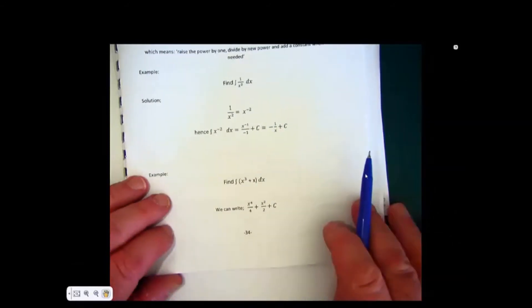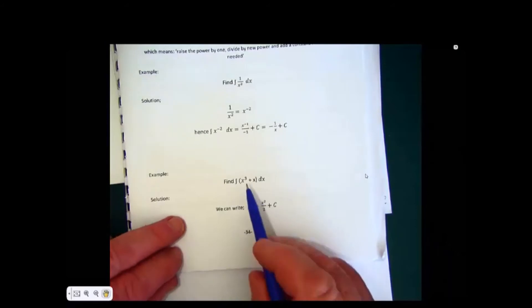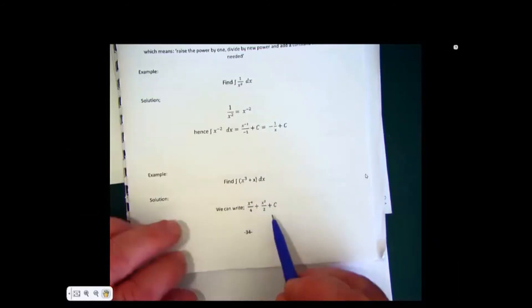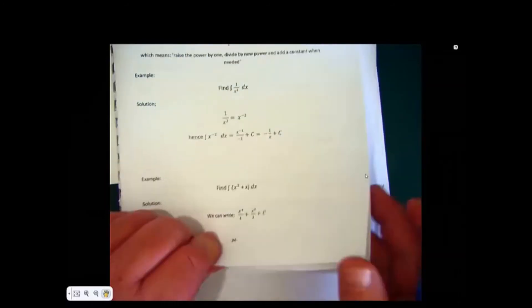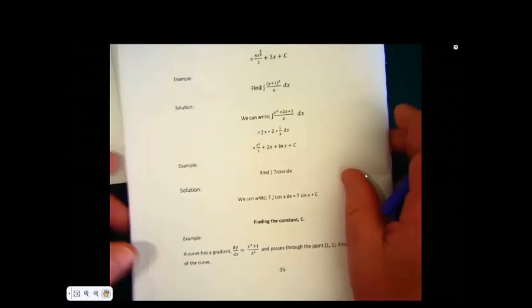The 1 at the bottom of the page can be done in a similar manner. This is fairly straightforward. Raise the power by 1, 3 plus 1 is 4, divide by the new power. x to the 1, raise the power by 1 becomes 2, divide by the power. And don't forget the c.